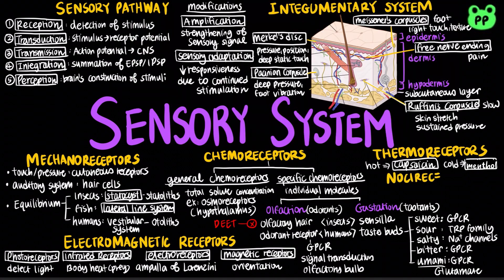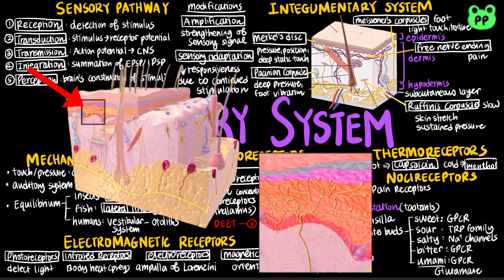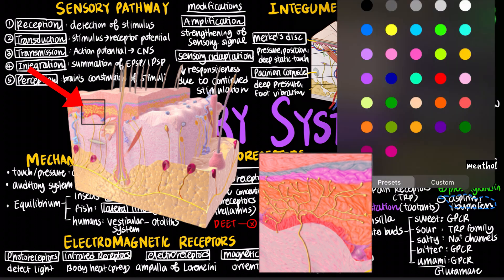The last type of sensory receptors are known as nociceptors, or pain receptors, which are a class of naked dendrites in the epidermis. Pain receptors also belong to the TRP family and respond to excess heat, pressure, or chemicals released from damaged or inflamed tissues. Nociceptors are activated by prostaglandin and inhibited by aspirin and ibuprofen.